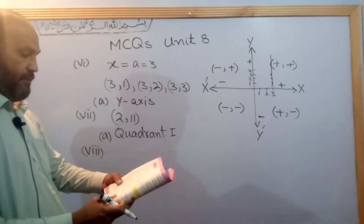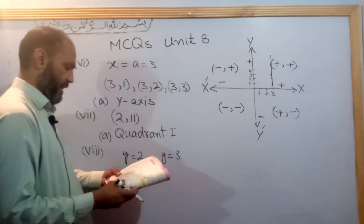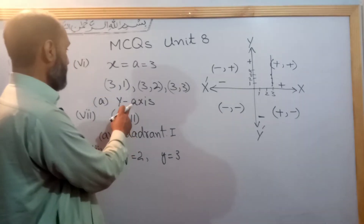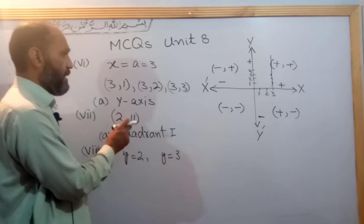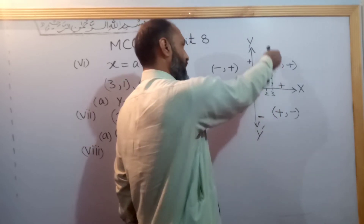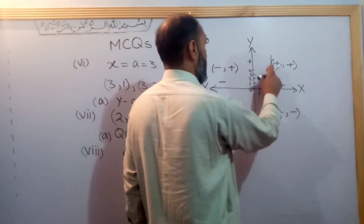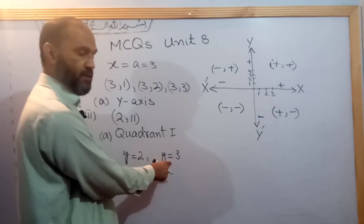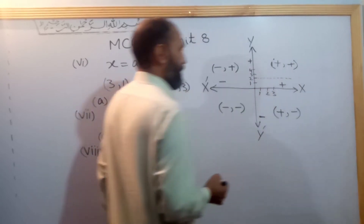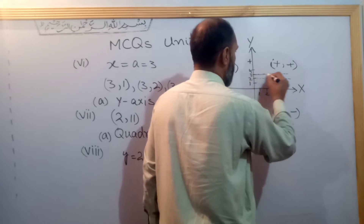Question number eight: the solution set of the lines y = 2 and y = 3. These are horizontal lines - when y is constant, x can be any value. The solution set of y = 2 and y = 3 as a system has no intersection since these are parallel horizontal lines with different constant values.